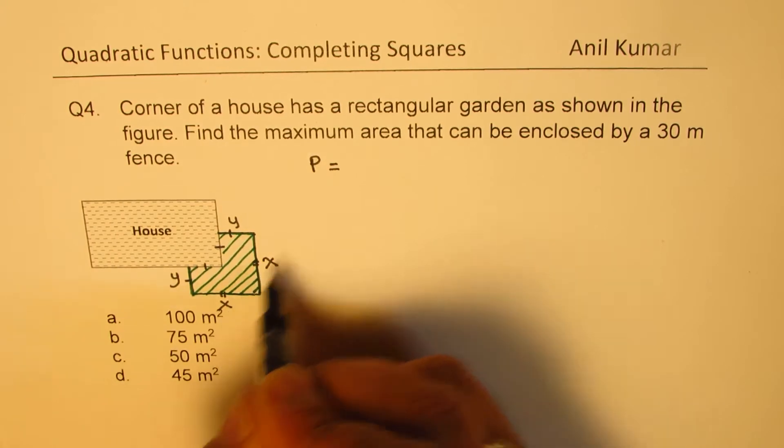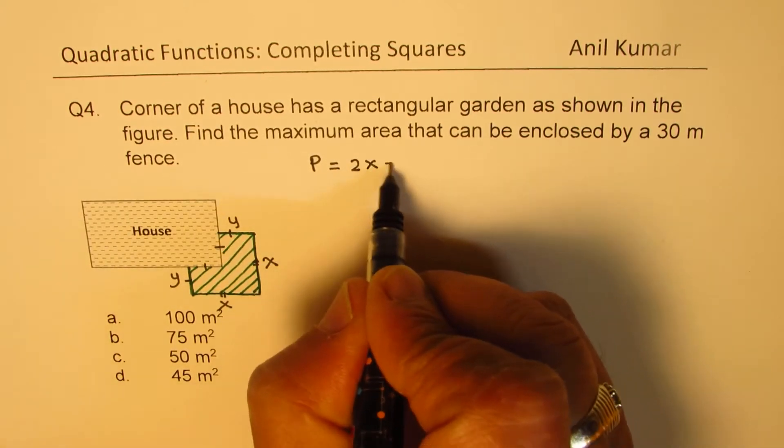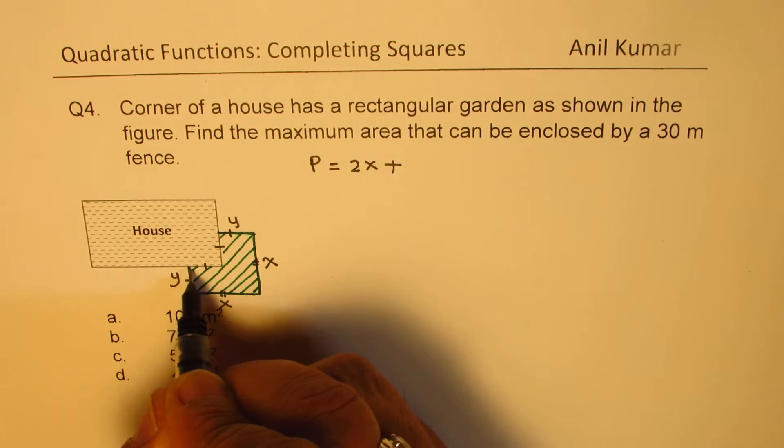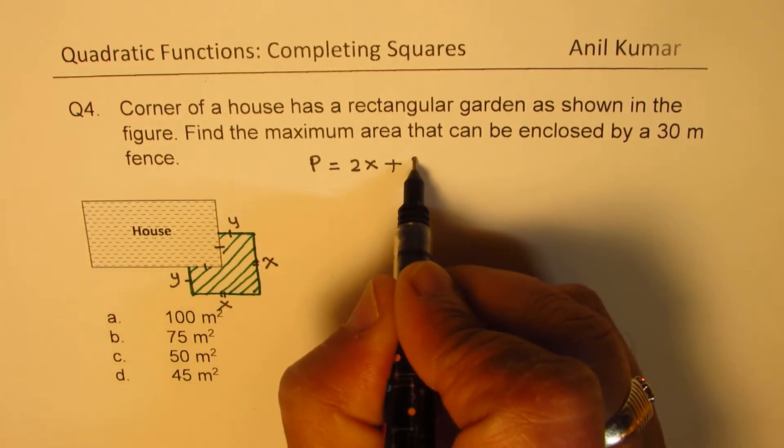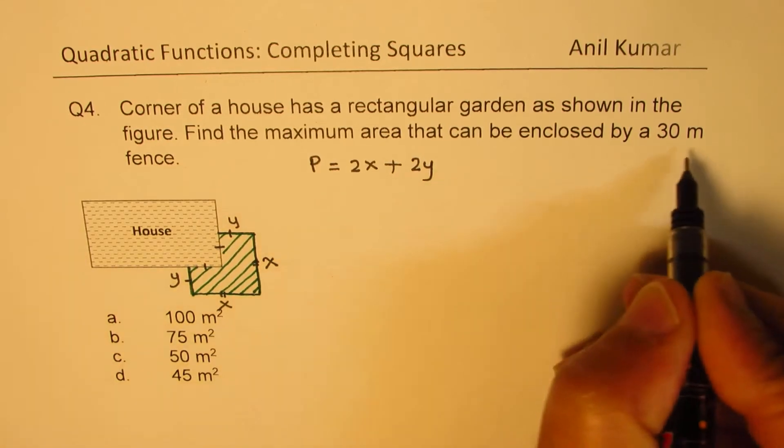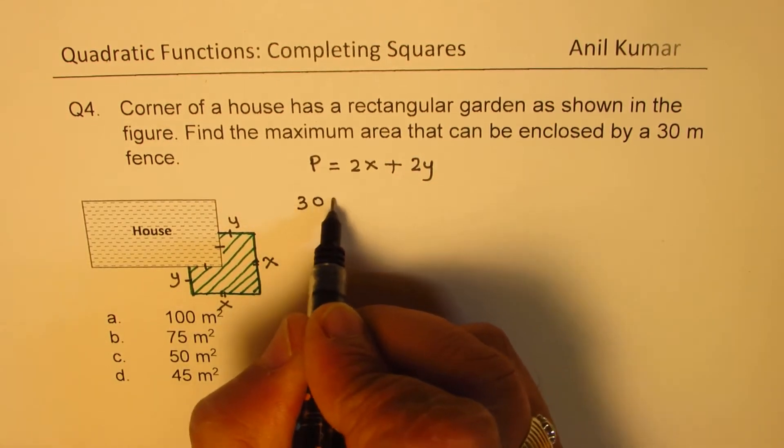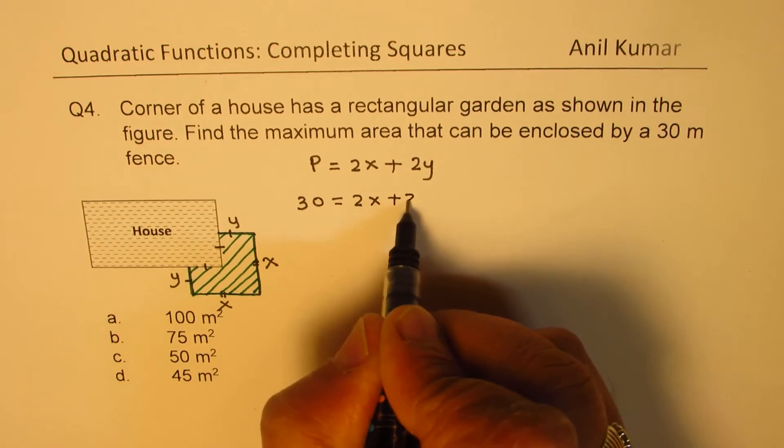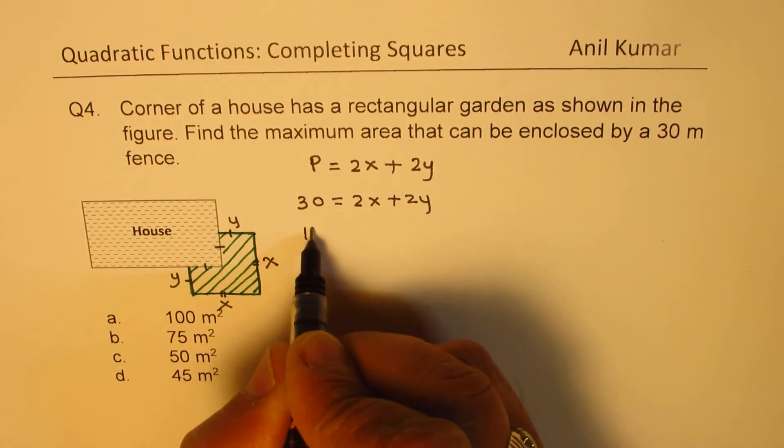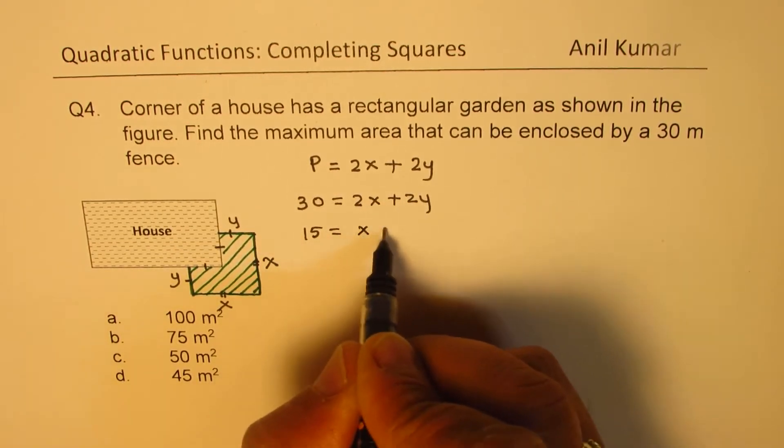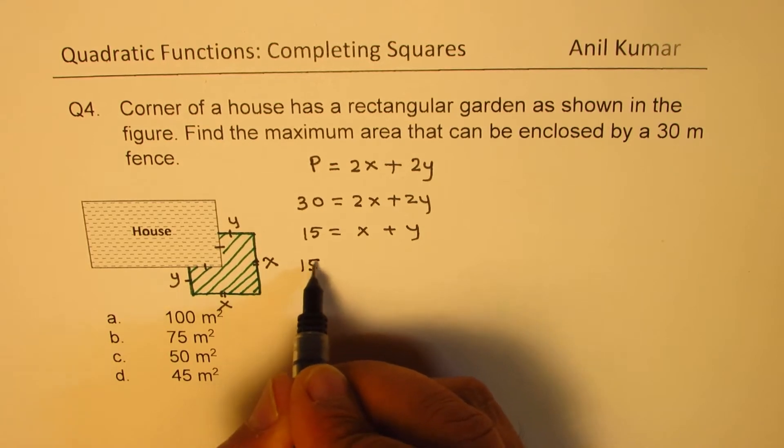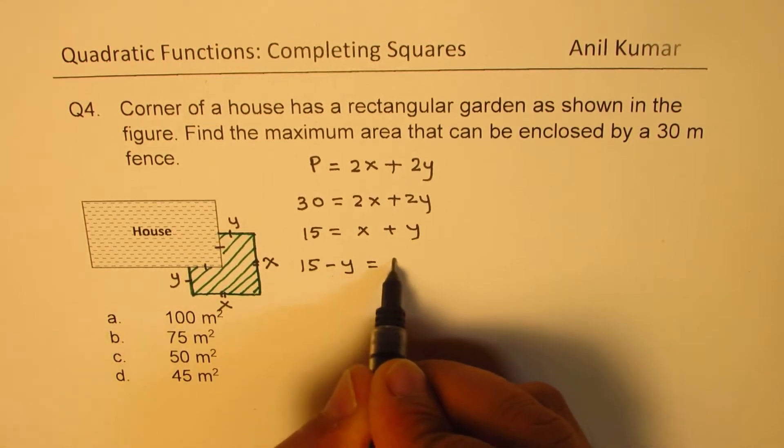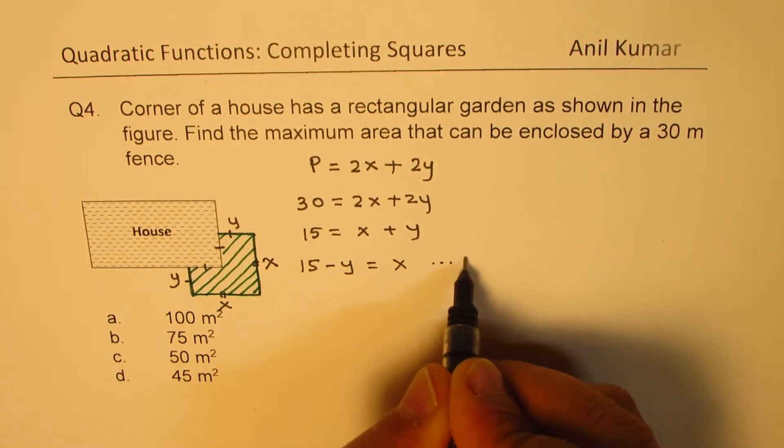Perimeter equals 2x plus 2y. This is the side of a house, so we don't need fencing there. We write 30 = 2x + 2y. Dividing by 2 we get 15 = x + y. We can write one parameter in terms of another: 15 - y = x. Let's call this equation number one.